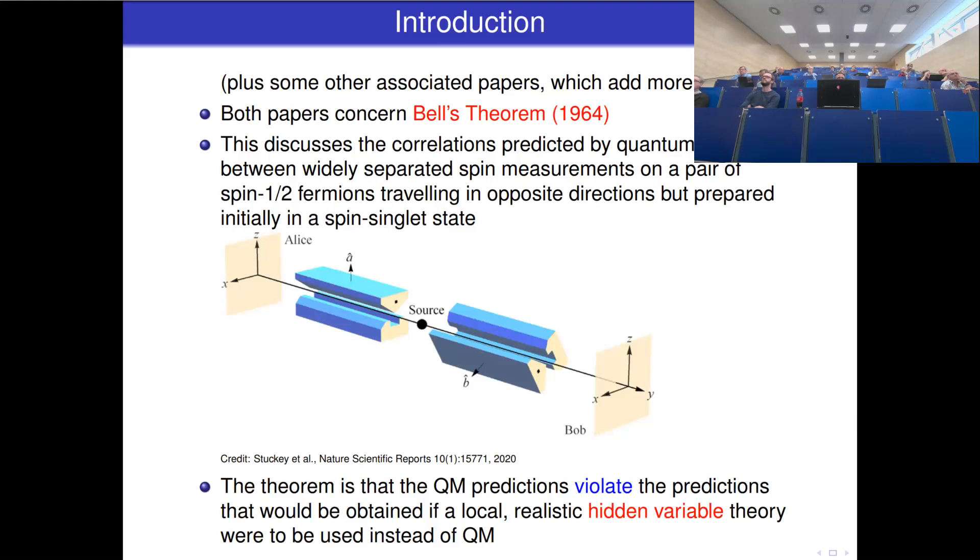This is the basic setup for Bell's Theorem. You have a source which can produce particles in a rotationally symmetric singlet state. These come out, and unfortunately this diagram misses the very long distance that's meant to occur between the source and the Stern-Gerlach apparatuses, which are run by people at causally destroyed distances from the central source, measuring the direction of spin.